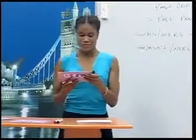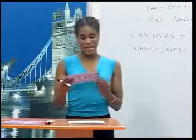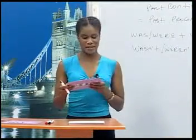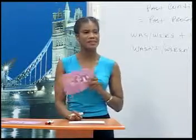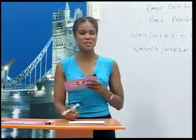Now let's practice the past continuous. Sylvia, what were you doing at your brother's wedding? I was eating lots of food. Alberto, what were you doing at your cousin's wedding? I was drinking wine. I was talking with friends. My cousin from Naples was there too — I was visiting with her. She is my favorite cousin. I'm glad you had a good time.